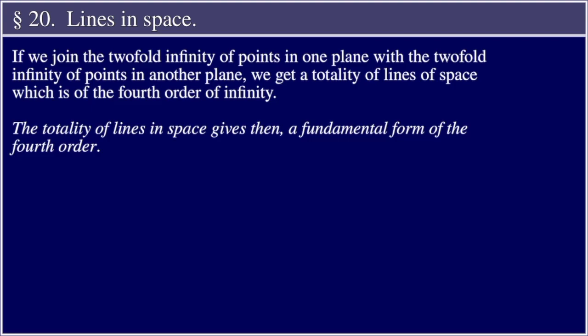Section 20, Lines in Space. If we join the two-fold infinity of points in one plane with the two-fold infinity of points in another plane, we get a totality of lines of space which is of the fourth order of infinity. The totality of lines in space gives, then, a fundamental form of the fourth order.